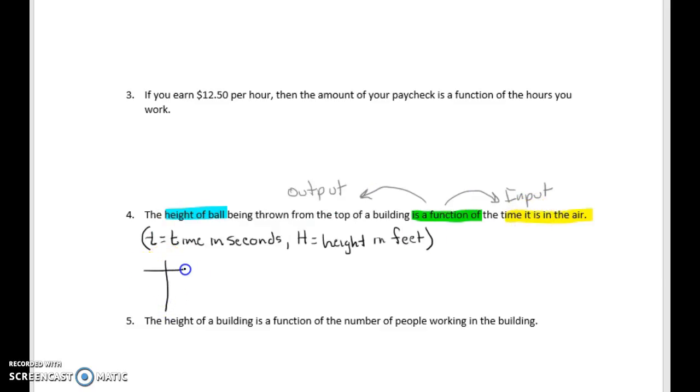So again, if we had a good old input-output, if we had two seconds go by, we'd probably have, I don't know, somewhere around maybe 200 feet. Now, can two seconds be any other thing than 200 feet? No, it can only be 200 feet.